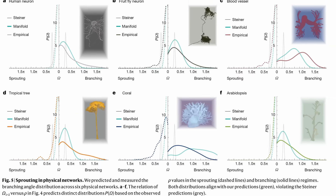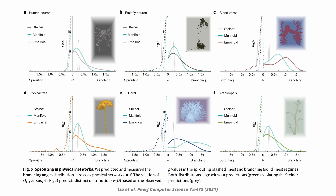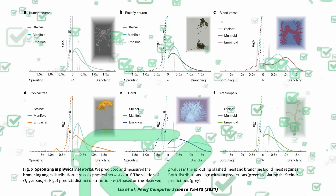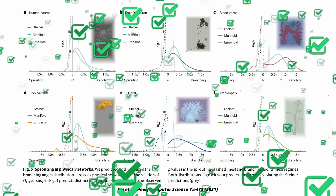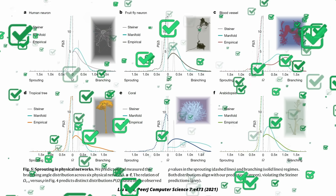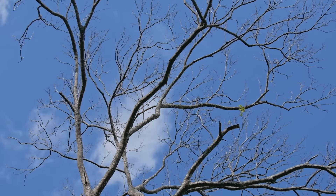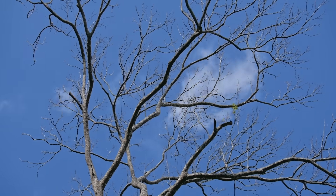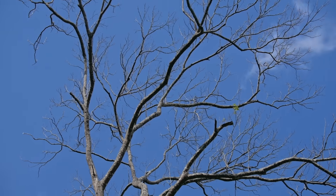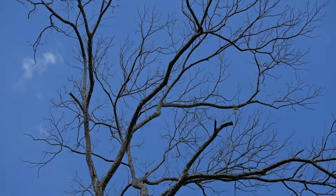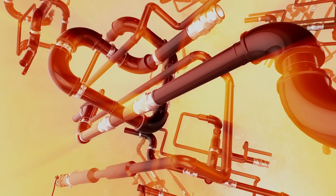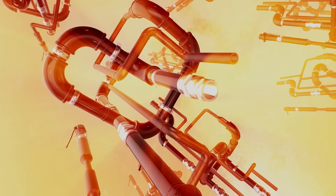The authors also check their results against data — human neurons, fruit fly neurons, blood vessels, trees, corals, plants. The statistics line up remarkably well: the frequency of three-way junctions, angle distributions, and the prevalence of right-angle branches all match the predictions of the string theory model. Interestingly, the model doesn't just work for networks whose branches are genuinely hollow like blood vessels, but for any network where the growth requirement is minimizing surface area — whether to minimize material, tension, or interactions with the environment. So the model is much more general than it sounds at first.